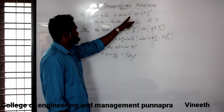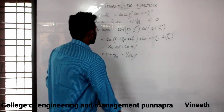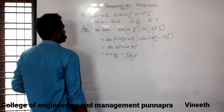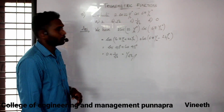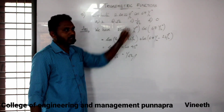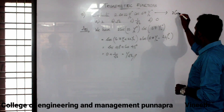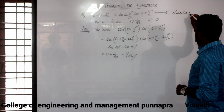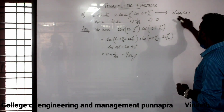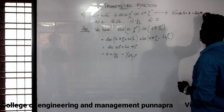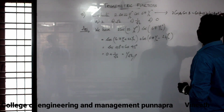Evaluate 2 cos 22.5 degrees times cos 67.5 degrees. The options are 2 root 2, C: 1 by root 2, and option A: 0. Using the formula 2 cos A cos B equals cos(A plus B) plus cos(A minus B).